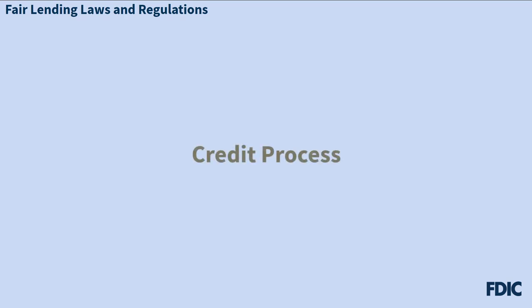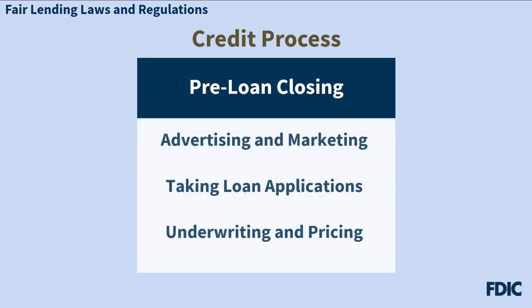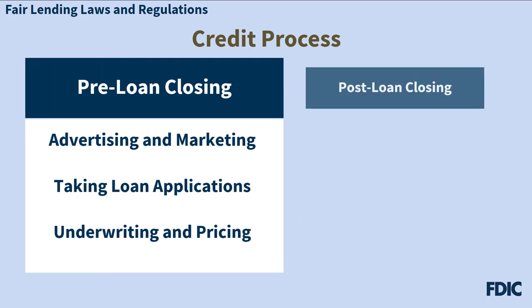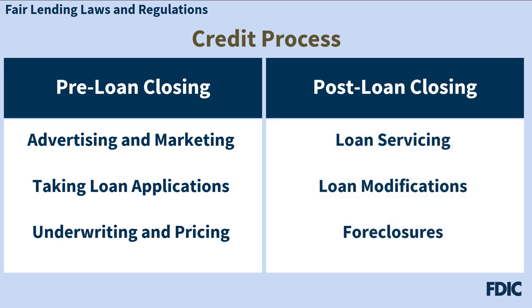In general, the Fair Lending Laws cover various aspects of the credit process. These include activities that occur prior to a loan closing, such as advertising and marketing credit products, taking loan applications, and underwriting and pricing loans. Fair Lending Laws also cover activities that occur after loan closing, such as loan servicing, loan modifications, and foreclosures.